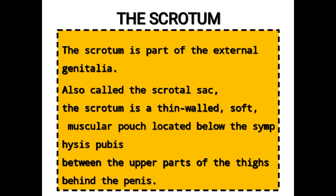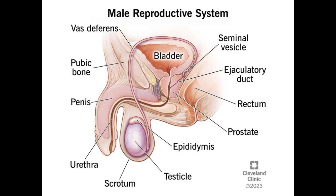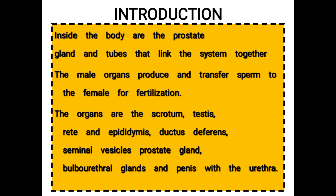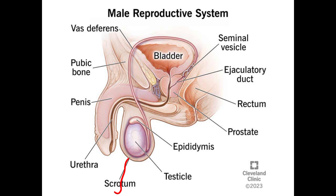Moving to the scrotum: the scrotum is the part of the external genitalia of the male reproductive system and it is also known as the scrotal sac. It has a thin wall and a soft muscular pouch, and it is located below the symphysis pubis — we can see from this diagram — between the upper parts of the thigh, and it is behind the penis.